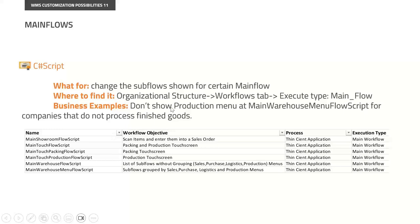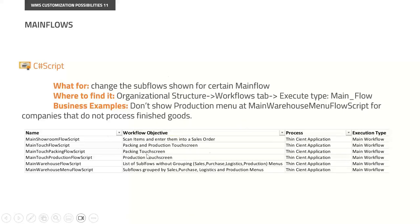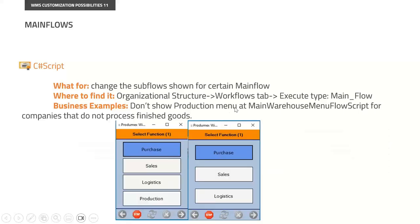Why may we want to customize main flows? Mainly to hide options. For example, if we have a customer that is not using production, we may want to hide the production button. We can find them in the organizational structure or flows tab, and they are called "main flow" in the description — that's how we differentiate main flows from sub flows. For example, don't show the production option for a customer which is not doing production with WMS. It's pretty logical and reasonable.